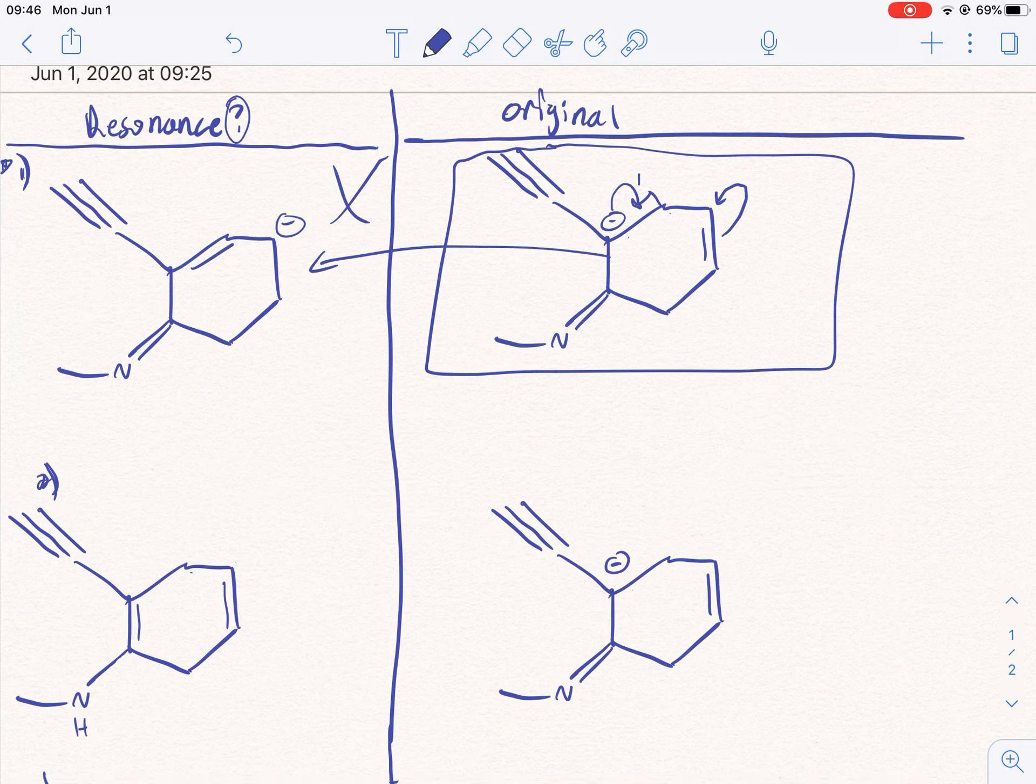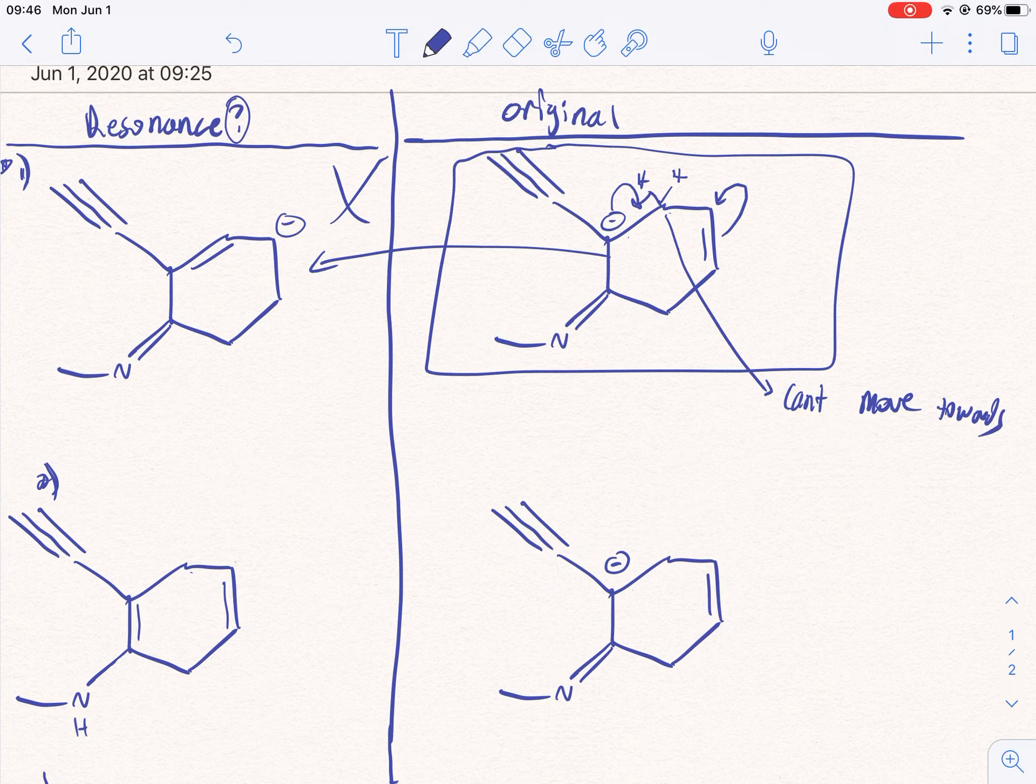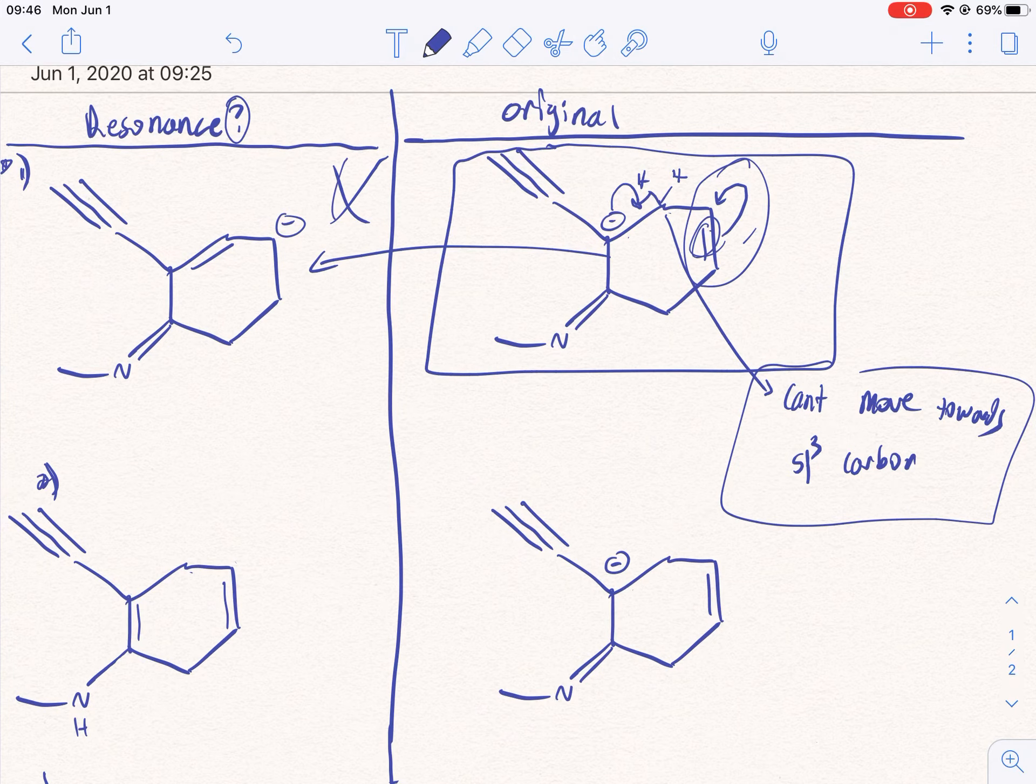Now let me tell you why that is wrong. It's wrong because we have a rule in resonance: can't move towards sp3 carbon. That's sp3, can't move there. Here this move right here could work if there was another pair of electrons bumping this group, but it just doesn't work. And this whole structure is wrong because of this simple fact right here. So this is not a resonance structure.